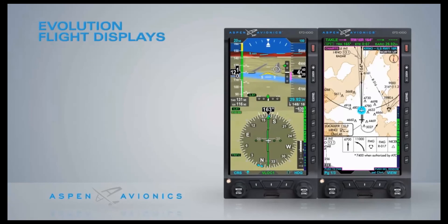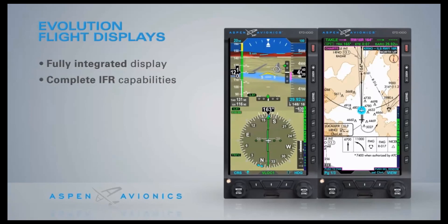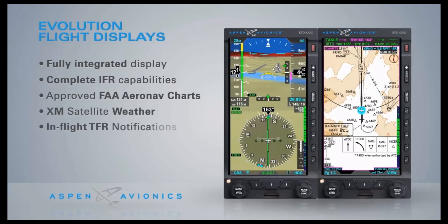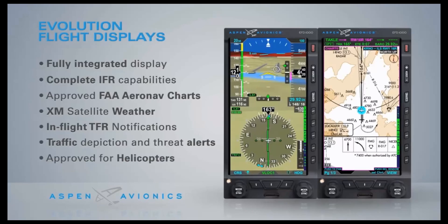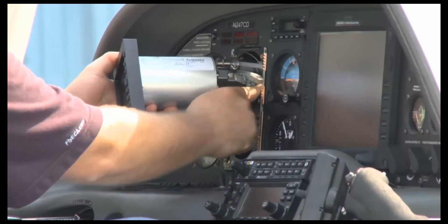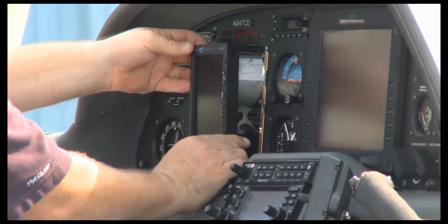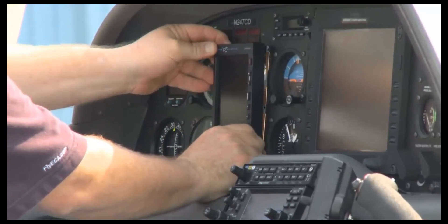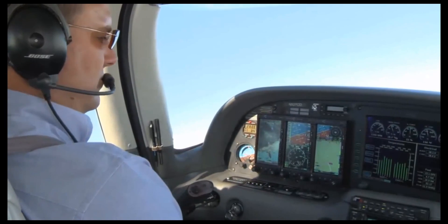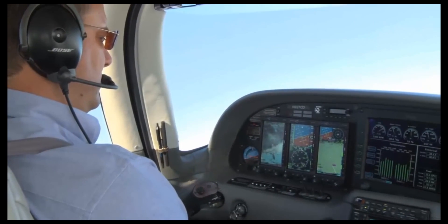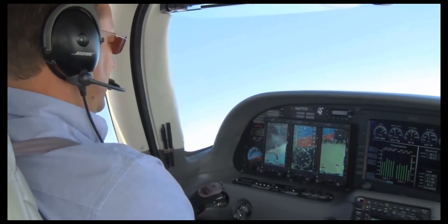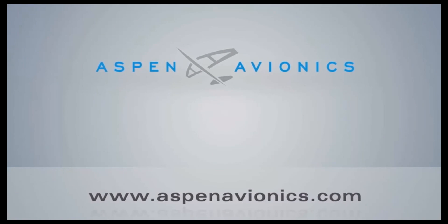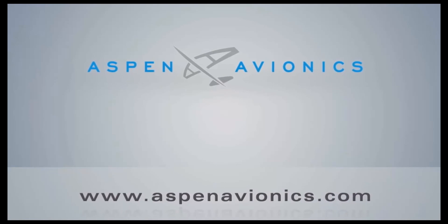In addition to Evolution Synthetic Vision, the Aspen Evolution flight displays also feature a fully integrated display, complete IFR capabilities, approved FAA AeroNav charts for a paperless cockpit, XM satellite weather, in-flight TFR notification, traffic depiction and threat alerts, and approval for helicopters. You can't go wrong with Aspen Avionics. Visit one of our authorized dealers and find out how an Aspen upgrade can change the way you fly. Join the thousands of satisfied operators enjoying the benefits of flying with Aspen Avionics — you won't be disappointed. The Aspen Evolution Flight Display System: a new way to look at avionics.